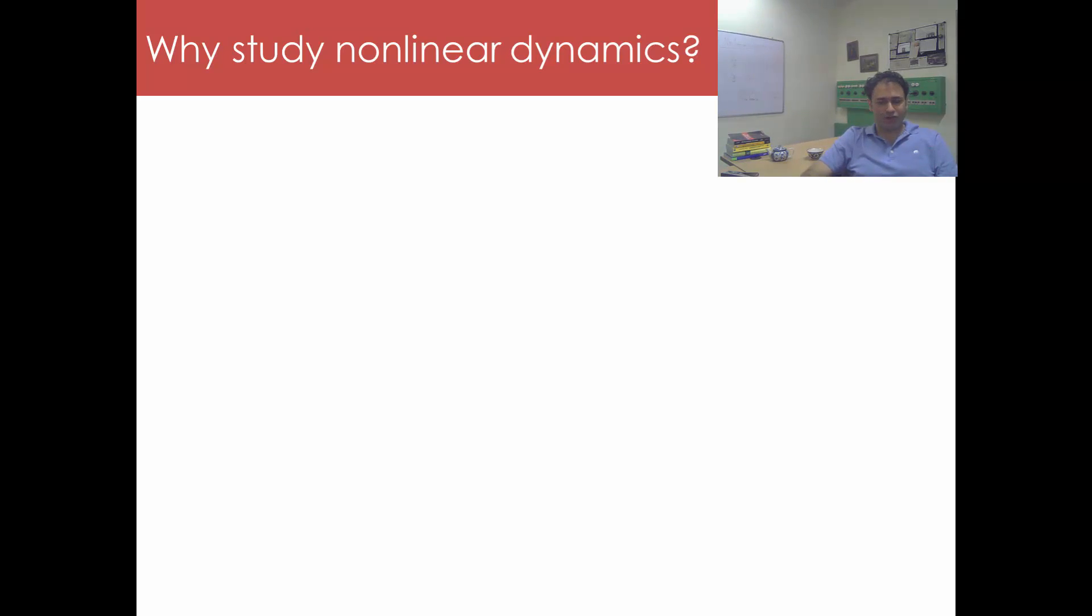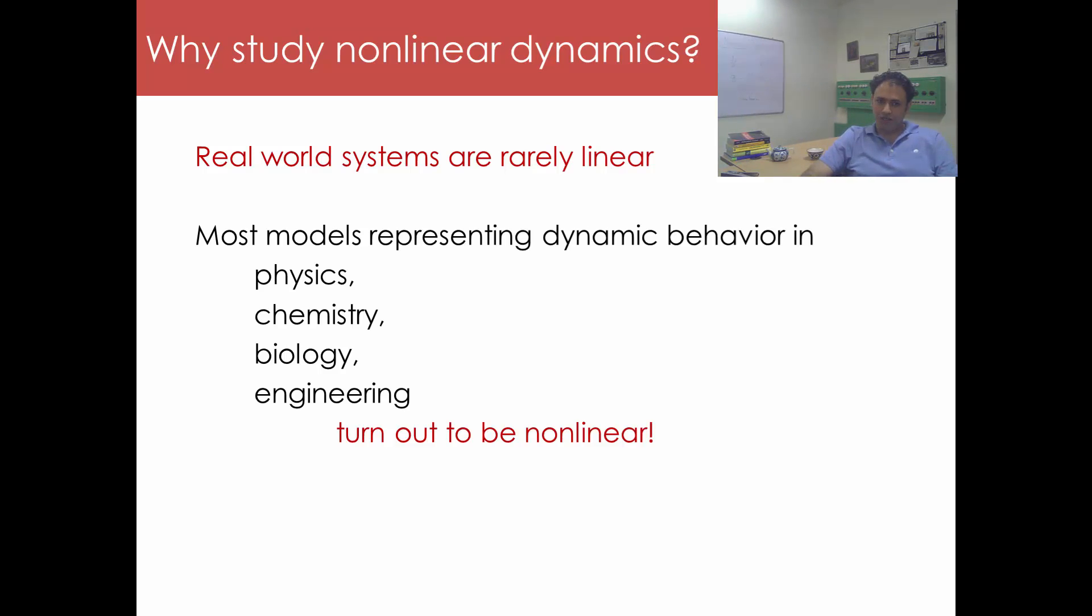The answer turns out to be rather simple: real world systems are rarely linear. If you look at most models representing dynamic behavior in physics, chemistry, biology, or engineering, they do in fact turn out to be nonlinear.